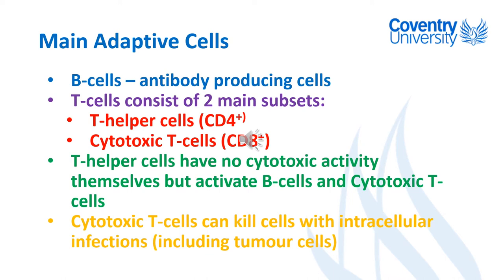This slide summarizes those cells: B cells produce antibodies; T helper cells can't kill anything themselves but can activate B cells to produce antibodies; and cytotoxic T cells are actually able to kill infected cells and tumour cells.